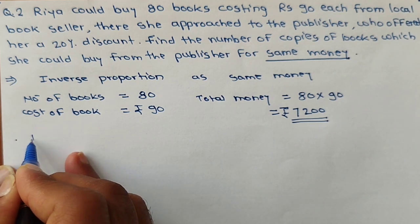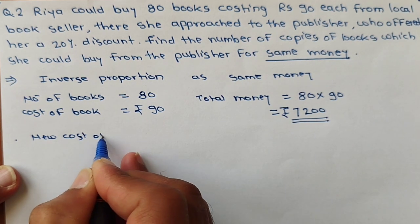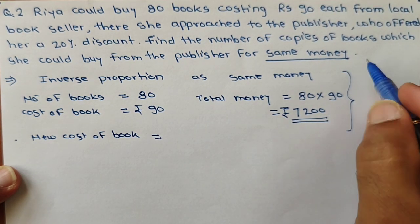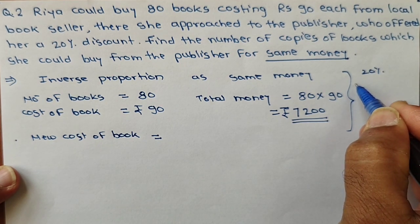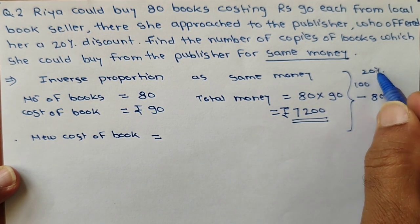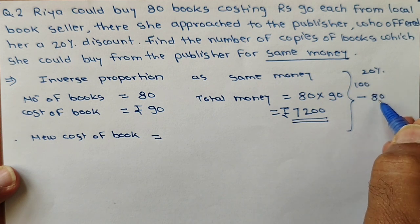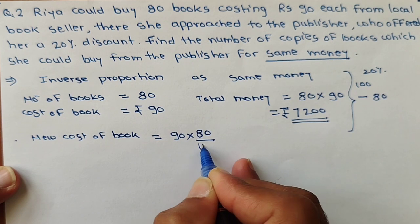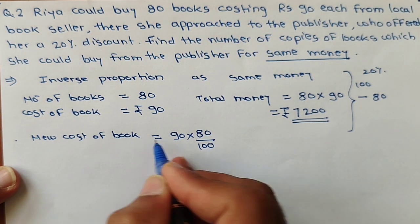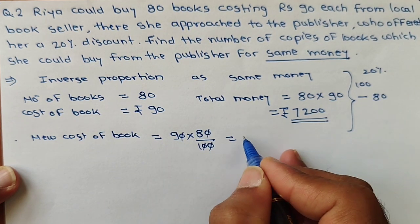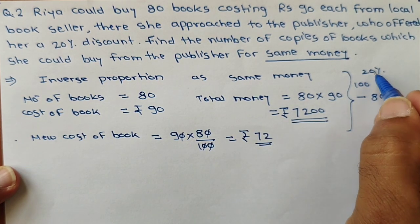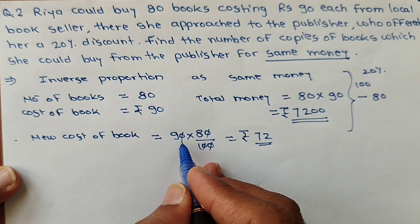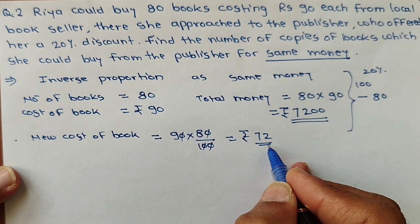In the next condition, the new cost of the book is calculated using the 20% discount. A 20% discount means if the cost is 100, the new cost is 80. Our original cost is Rs 90, so the new cost equals 90 into 80 upon 100. The zeros cancel, giving 8 into 9, which equals Rs 72.